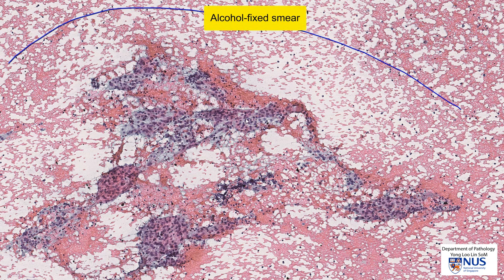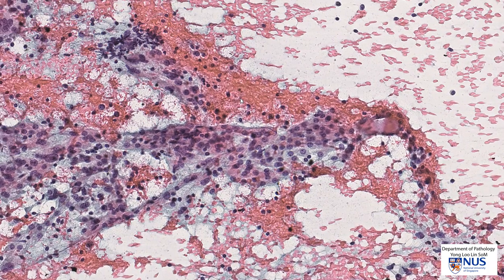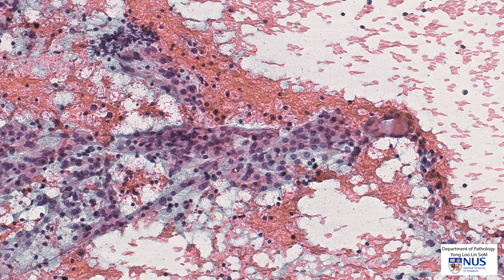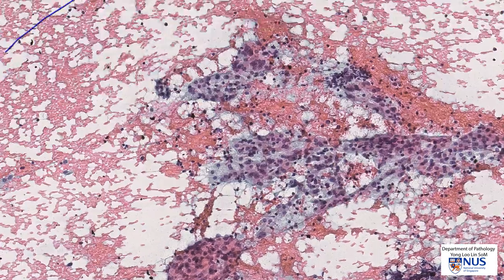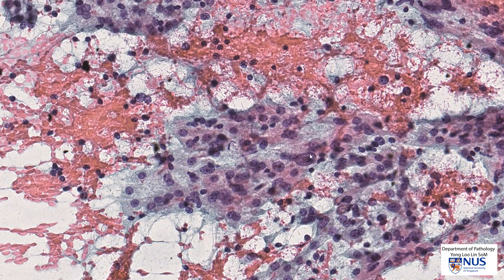Here is the alcohol-fixed smear from a different case, but also a patient with clinically confirmed Hashimoto thyroiditis. Again, we can see these oncocytic cells with quite abundant granular cytoplasm. The nuclei sometimes exhibit small nucleoli, and we can also appreciate that there is significant variation in nuclear size.